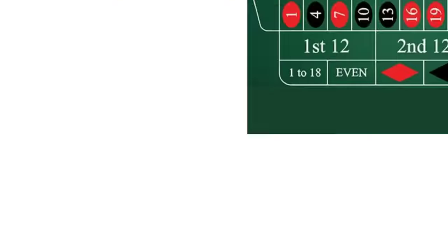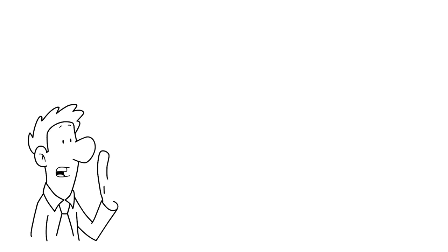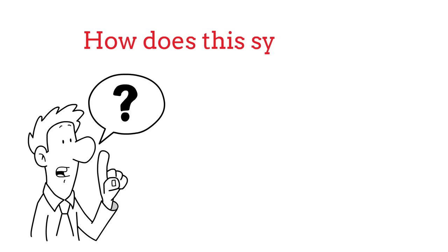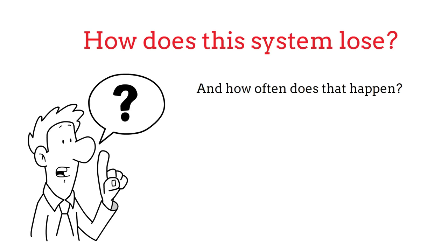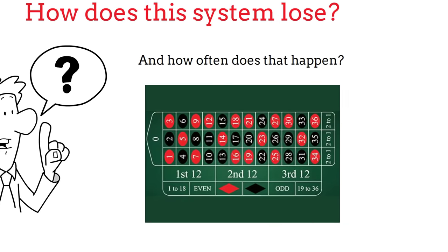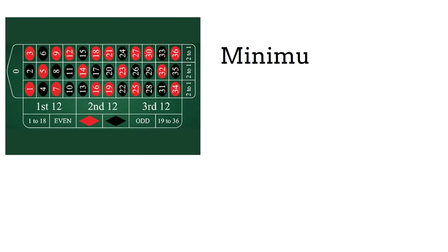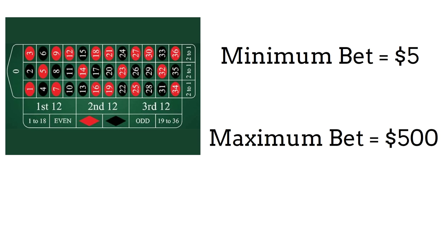So the major question we need to be asking ourselves now is when does this betting strategy not work? What situation has to occur for us not to be able to win money, and how likely is that to happen? To work this out, we need to identify the table limits on the roulette table we're playing at. As I've picked a $5 minimum table in our example, the table maximum bet is probably going to be $500. It's pretty standard for casinos to offer between 100 to 1 or 50 to 1 ratio on their minimum and maximum bets. The bigger ratios they offer, generally speaking, is better for us as the player.